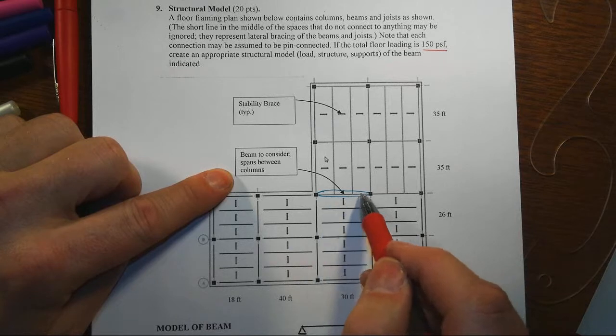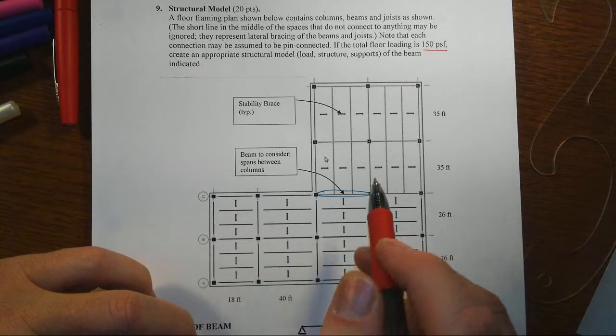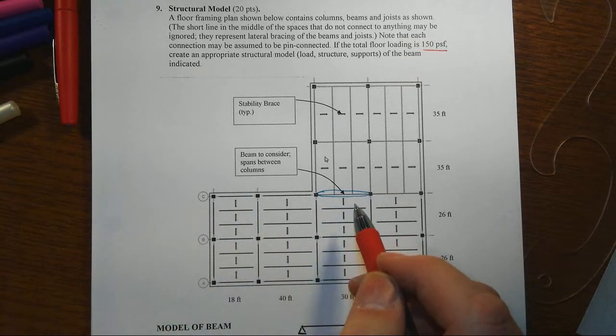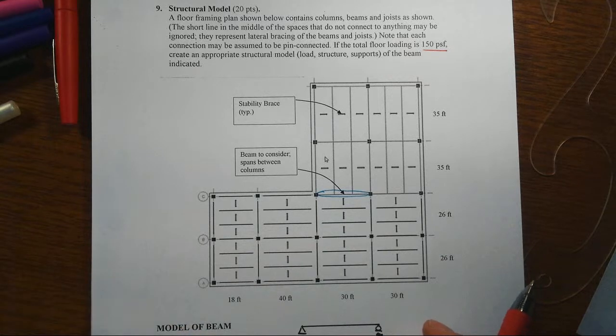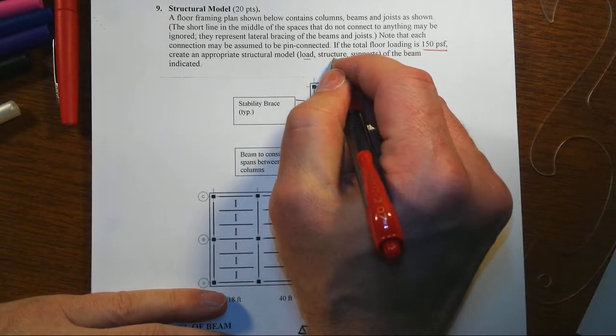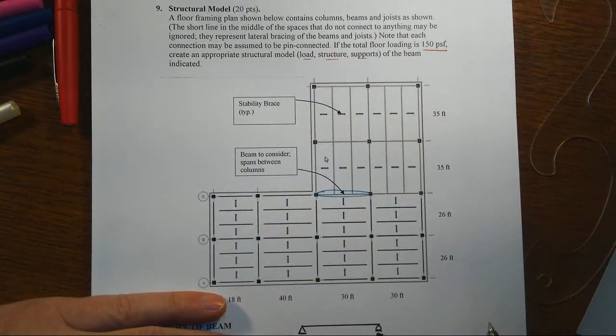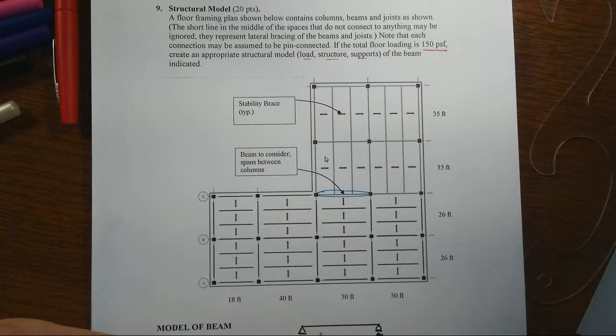We're supposed to look at this one beam that spans between the columns and come up with an appropriate structural model, which means we have three components: the load, the structure, and the supports of that beam. Now the structure itself at this stage is just a single line to represent the beam. We'll talk about EI and all those kinds of things at another point in time. This is really just about the supports.